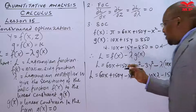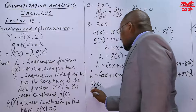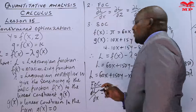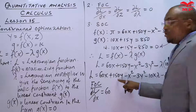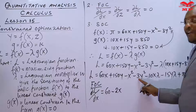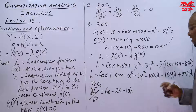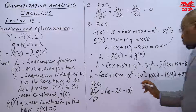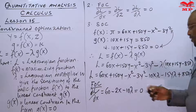For the first-order conditions, we take the partial derivative of the Lagrangian with respect to x: ∂L/∂x = 60 − 2x − 10λ = 0.